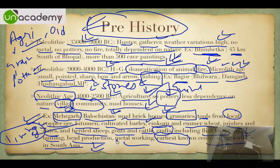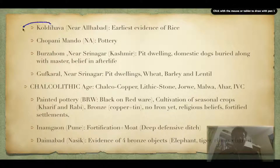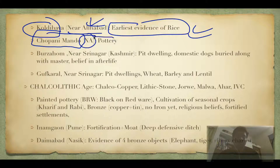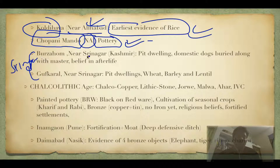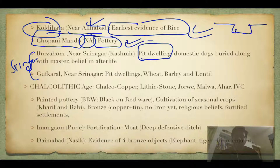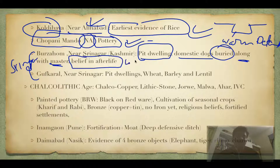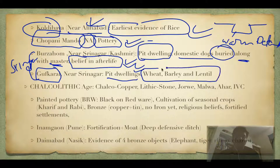Other Neolithic sites include Koldihawa, near Allahabad, which has the earliest evidence of rice. Chopani Mando, also near Allahabad, has the earliest evidence of pottery. Burzhahum and Gufkural are in Srinagar, Jammu & Kashmir. Burzhahum is famous for pit dwellings — people lived below ground level for warmth and defense. Domestic dogs were buried along with their masters, showing a belief in afterlife. Gufkural also had pit dwellings and evidence of wheat, barley, and lentil.